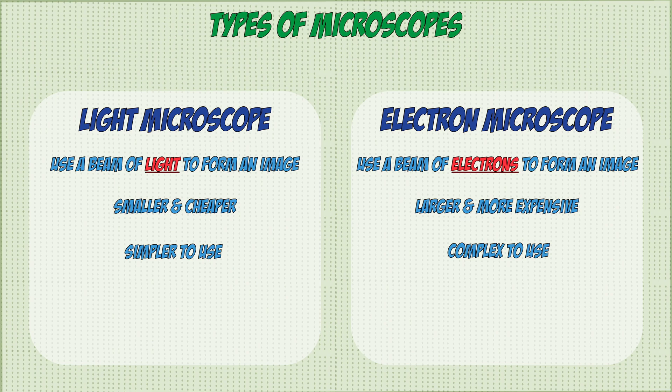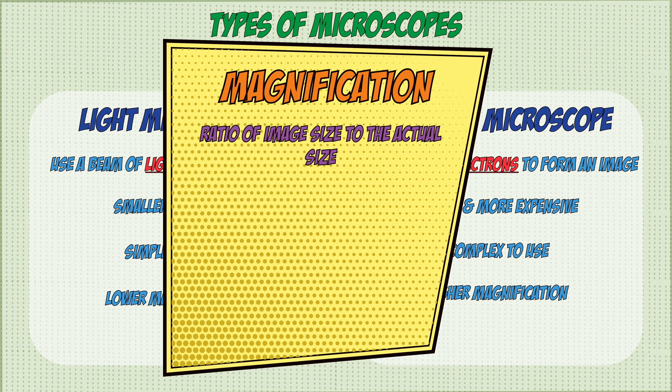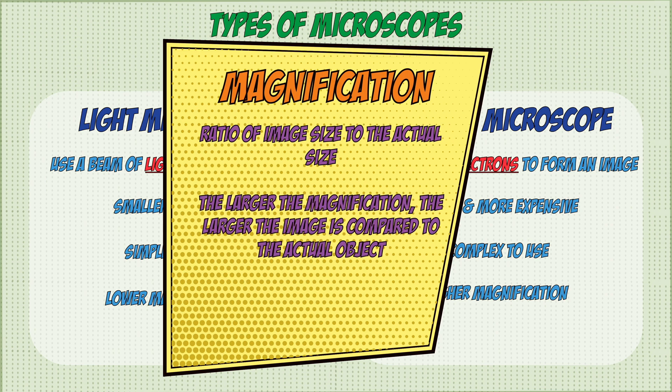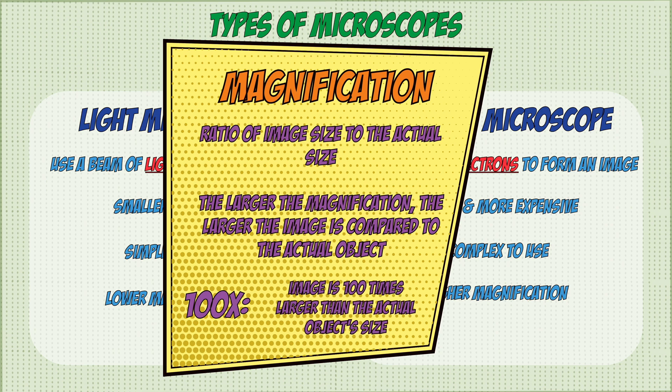In terms of viewing objects, electron microscopes are much better than light microscopes. They have a higher magnification, which is basically the ratio of image size to the actual size of the object. The bigger the magnification, the larger the object appears compared to its actual size. For example, a magnification of ×100 means the image appears 100 times bigger than its actual size in real life.